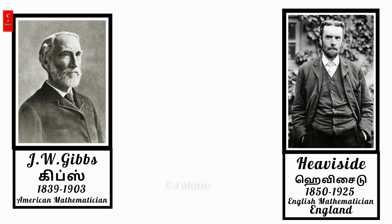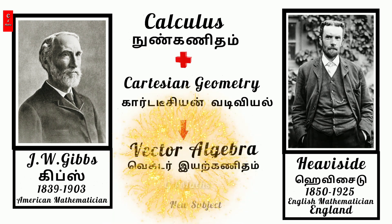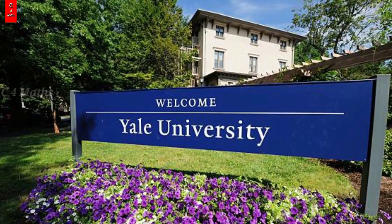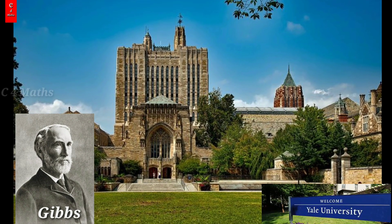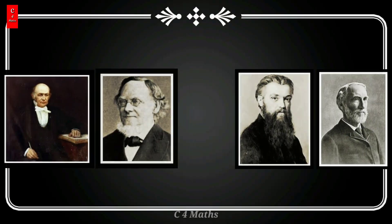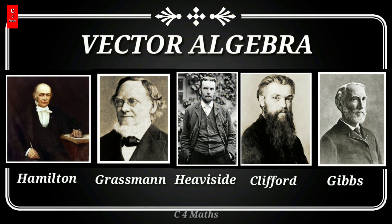Gibbs, an American mathematician, and Heaviside, an English mathematician, worked on calculus, Cartesian geometry, and vector algebra in their books. The subject was created and developed in those books. Gibbs was a professor, Heaviside was an electrician and telegraph operator. Gibbs taught these vector algebra concepts and vector analysis to his students through lecture notes. Mathematical algebra became better through this work.